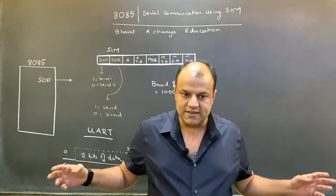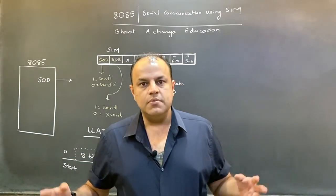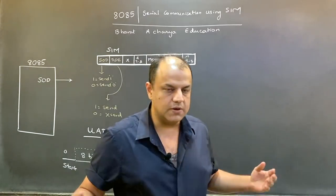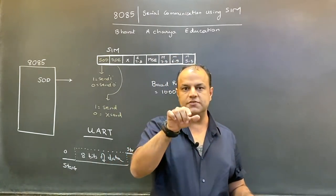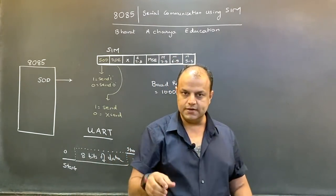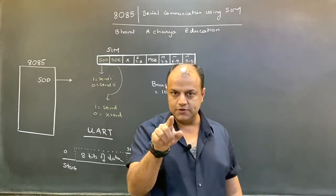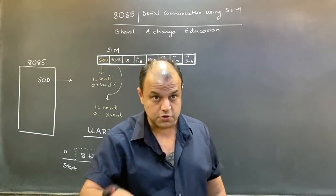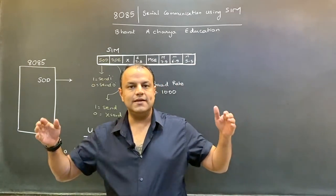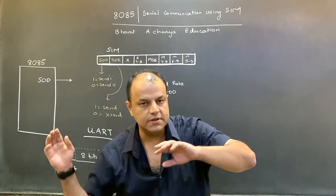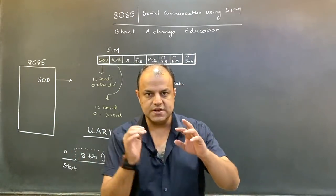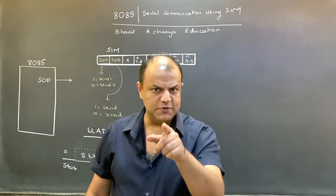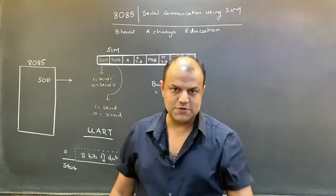You'll get a question in the exam: write a program to transmit 25H serially. Now 25H is 00100101 in binary — 0010 is 2, 0101 is 5. So these are your 8 bits that you're going to send. First you will send a 1, then a 0 — because you send LSB first. These are principles of communication.